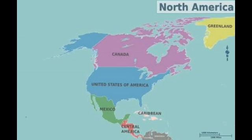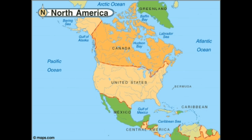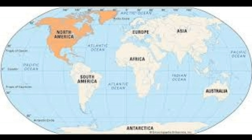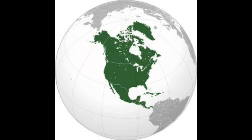Location: North America lies in the northern hemisphere, to the west of the prime meridian. It covers an area of nearly 24 million square kilometers. From south to north, it extends for a distance of more than 8,000 kilometers, stretching almost from the North Pole to the equator. The Tropic of Cancer and the Arctic Circle pass through the continent.